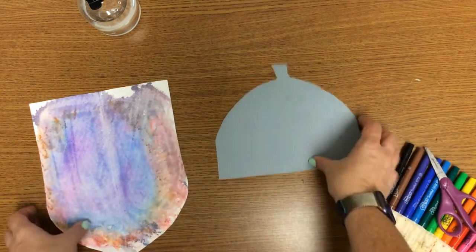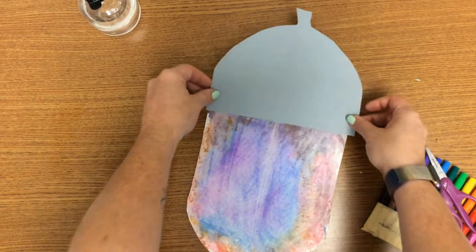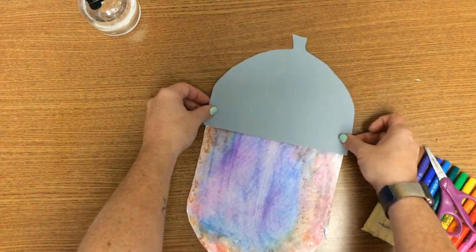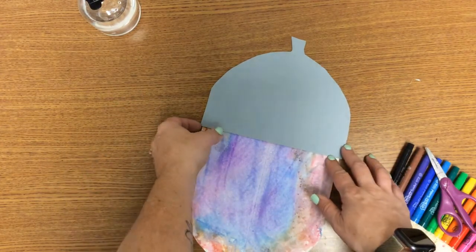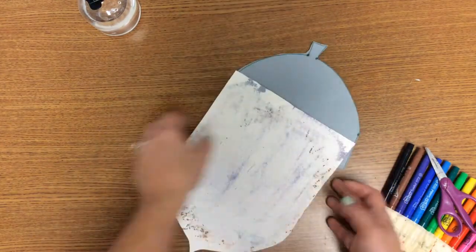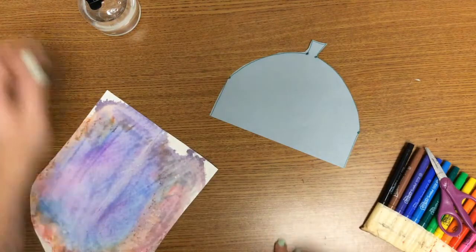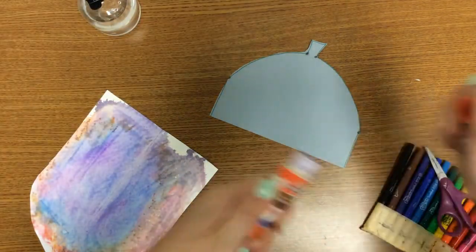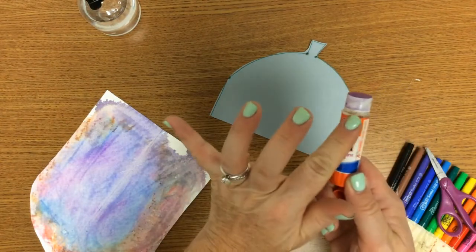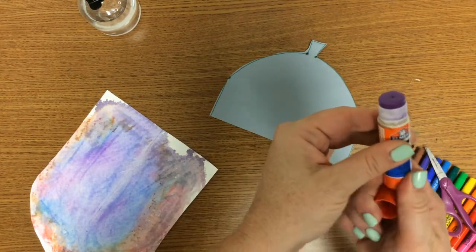Then what we're going to do is use our glue stick and stick our acorn top on. I'll flip this over and get my glue stick. Remember, when we use a glue stick, we always want to make sure it goes down when we put the lid on.